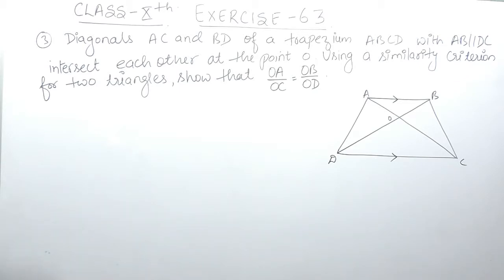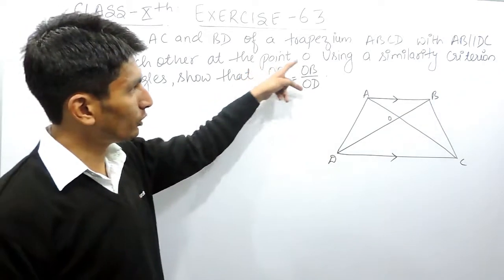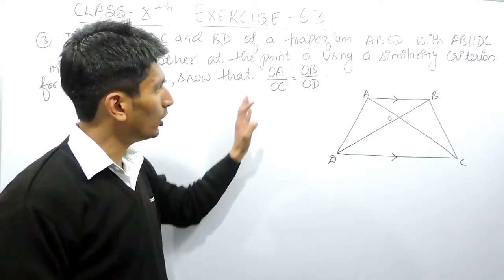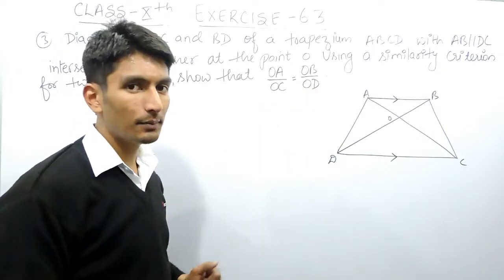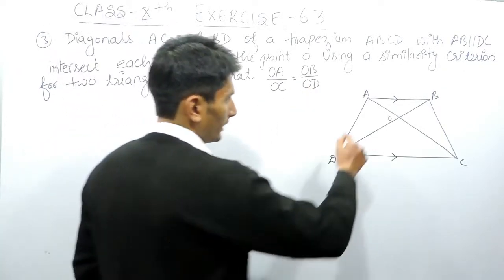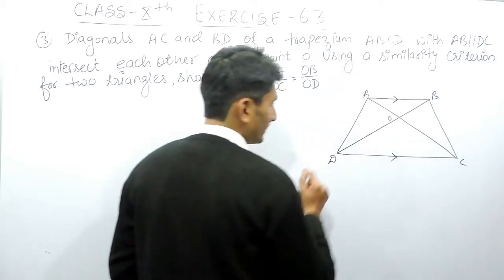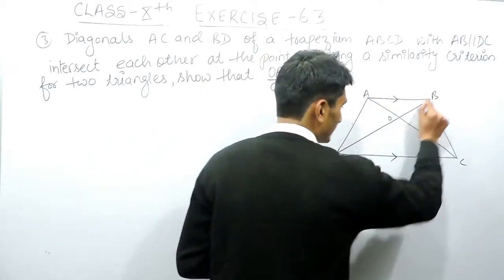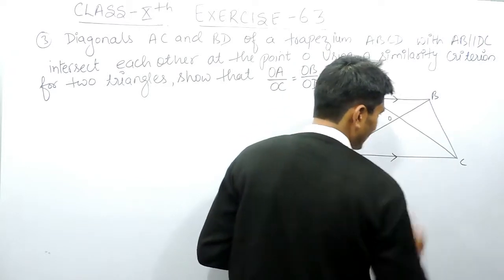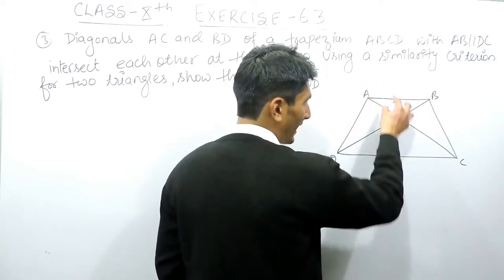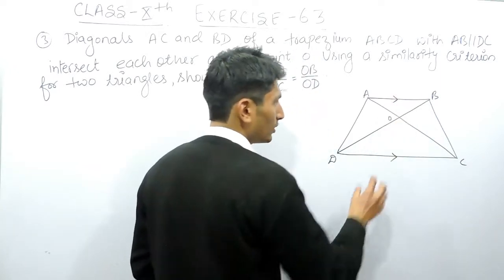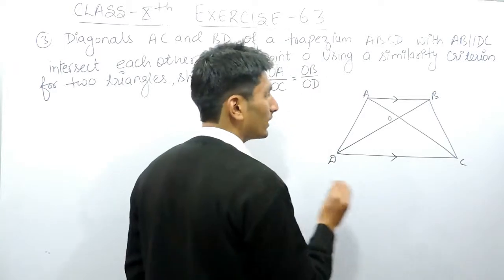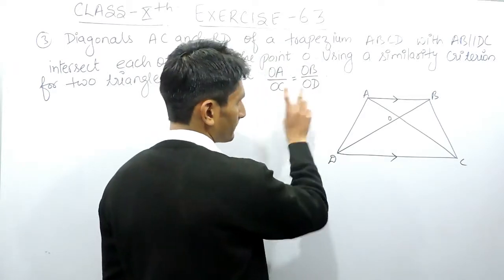Using the similarity criterion for two triangles, we have to show that the ratio between the corresponding sides are equal — that is, the sides of the two triangles are in proportion. Here ABCD is a trapezium in which side AB is parallel to side DC, and using similarity you have to prove that the sides of these two triangles are in equal ratio.